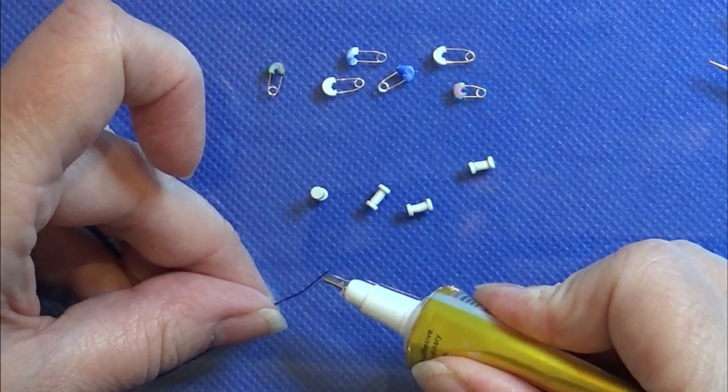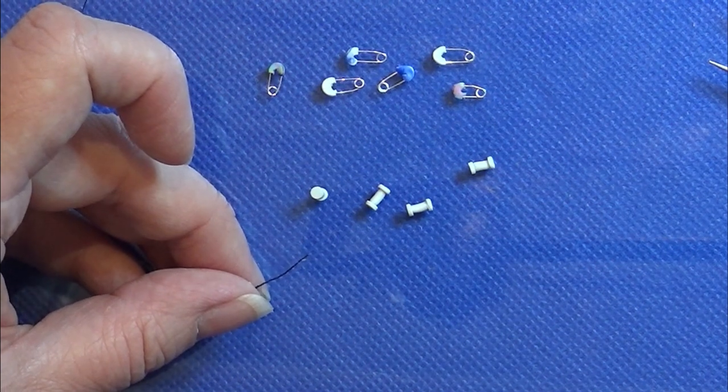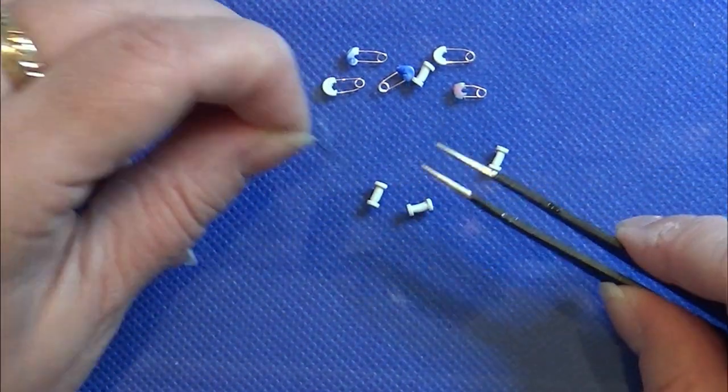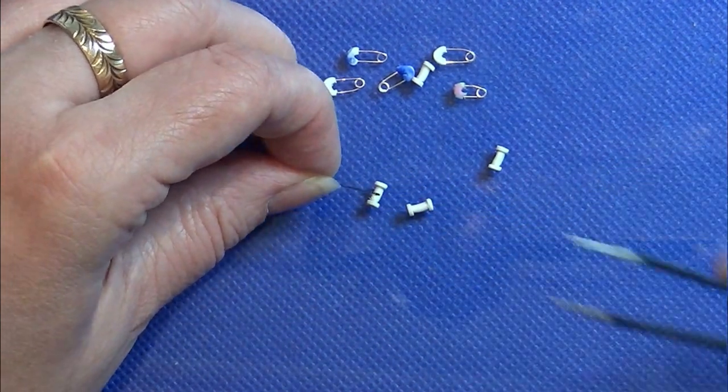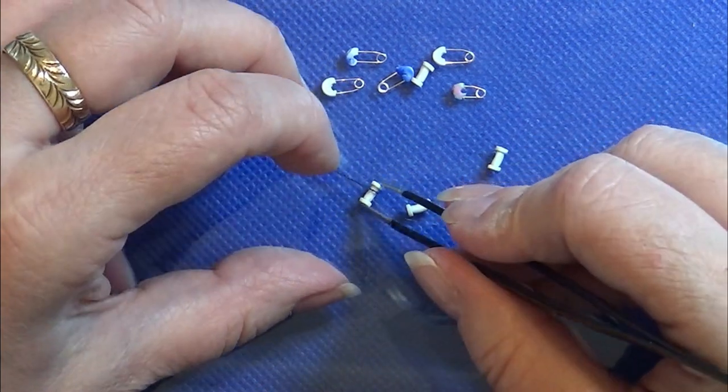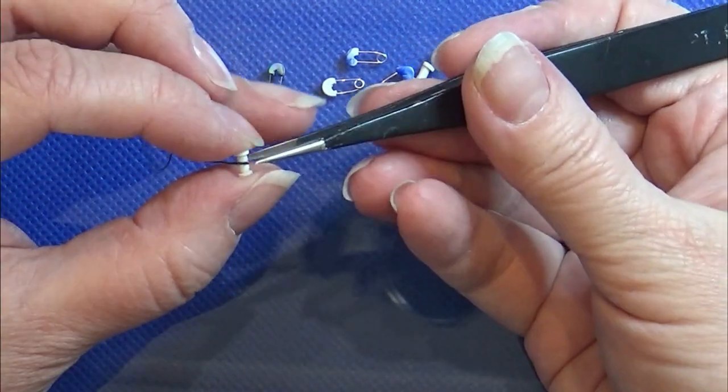For the sewing thread spools, I'm just taking a tiny bit of sewing thread and rolling it on there, just gluing the first piece down and rolling it on and gluing down the last end of it so that it looks nice and neat.